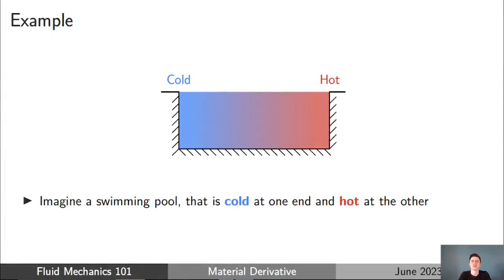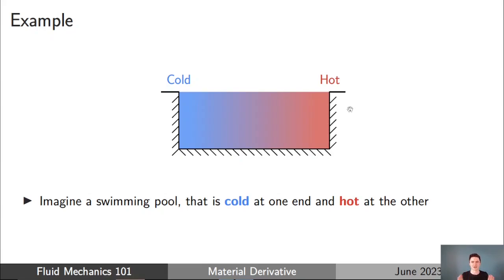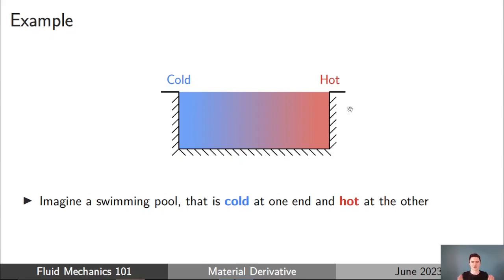The easiest way to understand the different forms of the Navier-Stokes equations is to start with a simple example. Imagine a swimming pool or a large volume of water contained in a container. For some reason we don't need to think about, the pool of water is cold at one end and hot at the other end. There's a gradient of temperature from one end to the other. I'm considering a simple one-dimensional case — cold at one end, hot at the other.